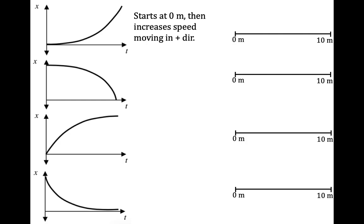To do the motion map, we essentially take a snapshot every one second — every equal interval of time — to record where the object is located. It starts at a position of zero meters, so I'm going to put a dot right here. Initially it's not moving because the slope is zero, so I'm not going to draw an arrow attached to this first dot.